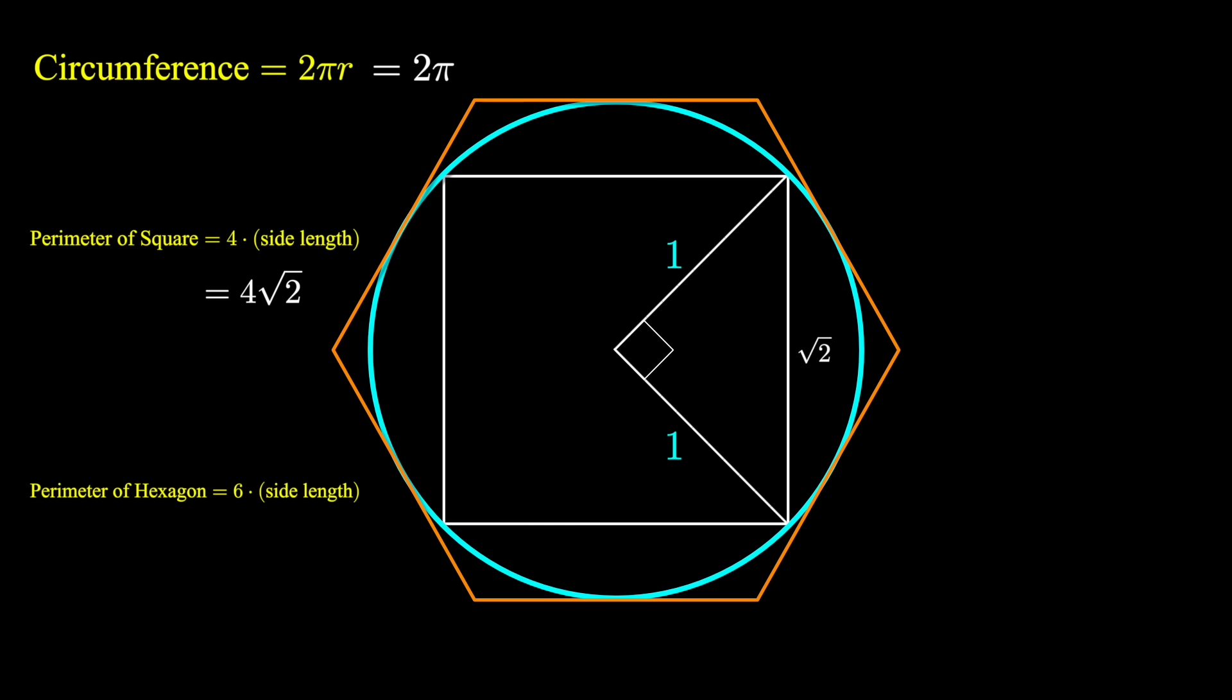Now, without diving too much into trigonometry, there's a nice formula for the side length of a circumscribed polygon. The side length is 2r tan theta, where theta is 180 degrees divided by the number of sides.